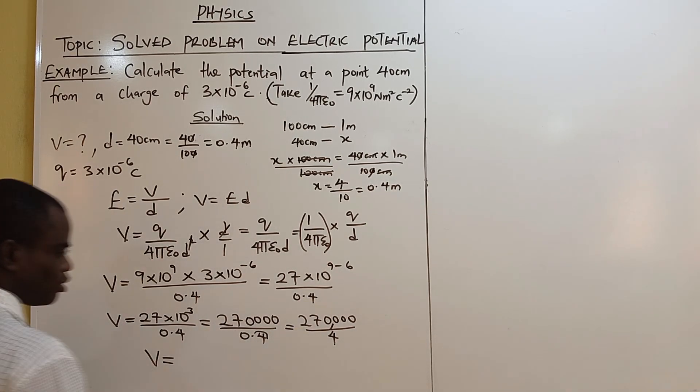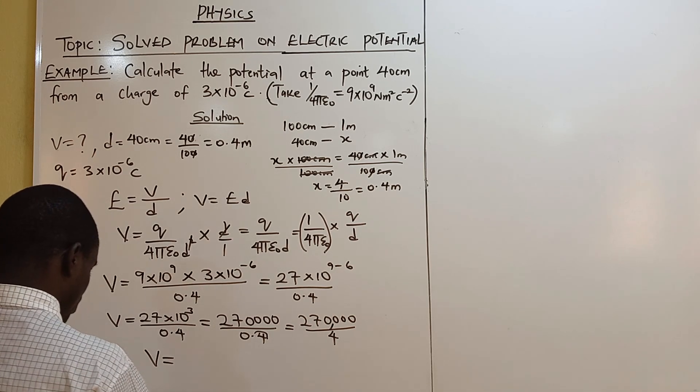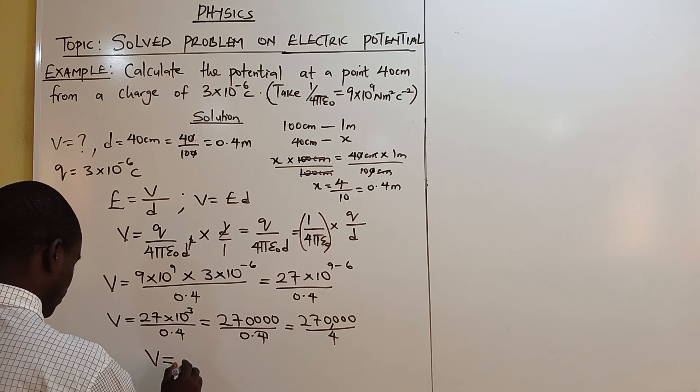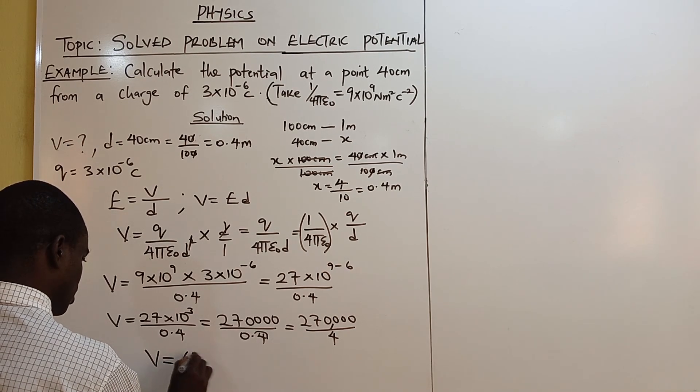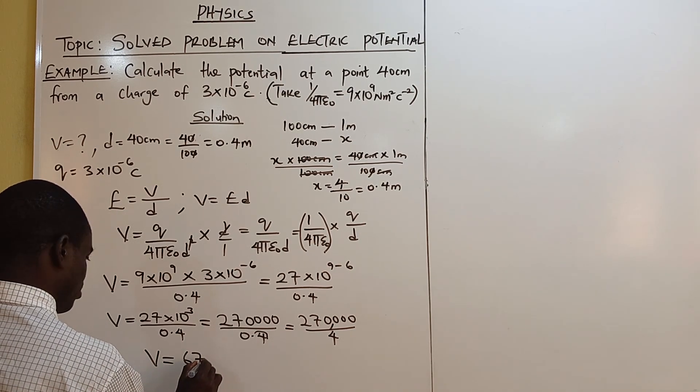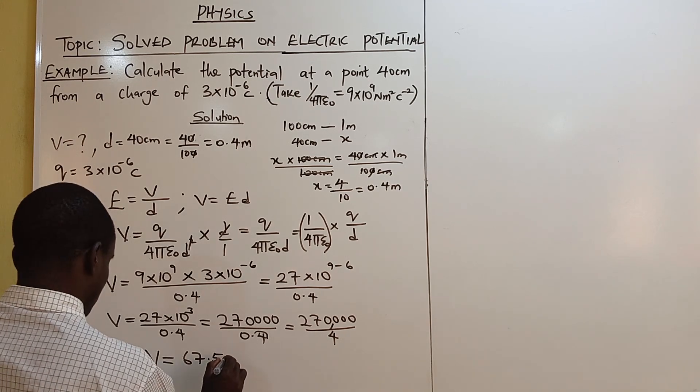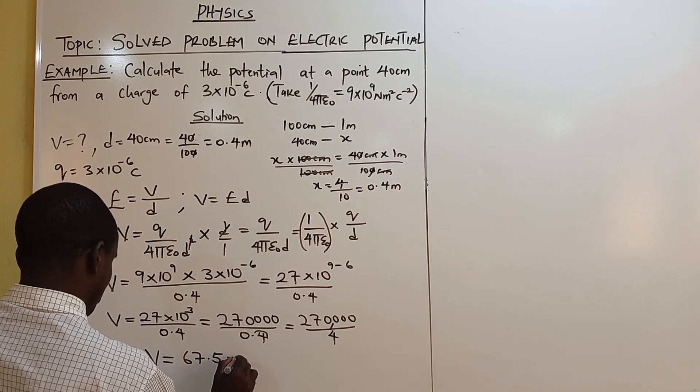The potential when you divide it, you have 270,000 divided by 4. When you press your calculator you have 67.5 times 10 raised to power...